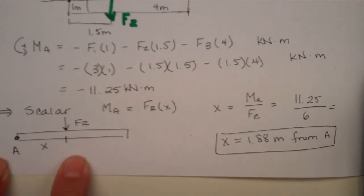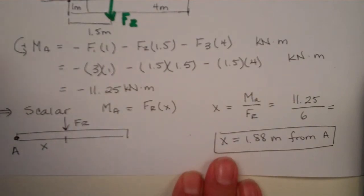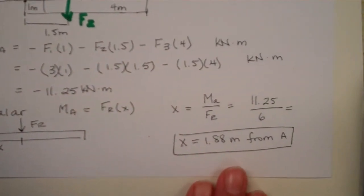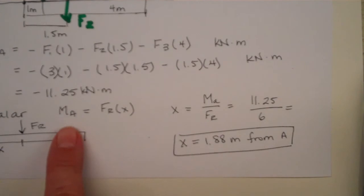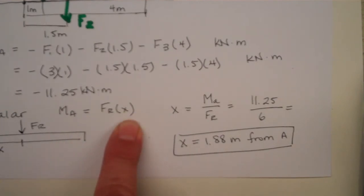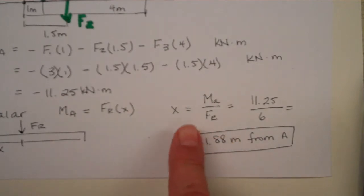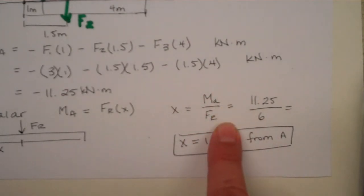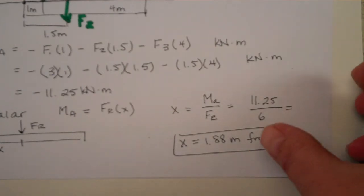If we're changing this to a scalar and we're asking where is that resultant force to cause this moment, we can solve for the location of this resultant force. The moment about point A would be the resultant force times the lever arm or the position x. So, solving for what x is, we would take the moment over the resultant force and see that we would put this resultant force 1.88 meters from point A to give us that moment.